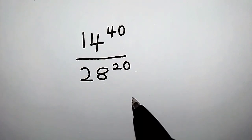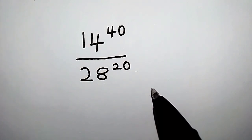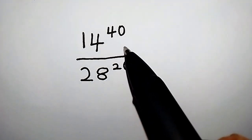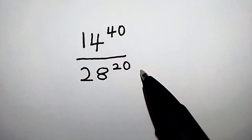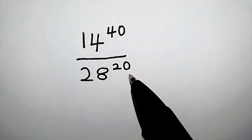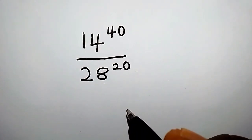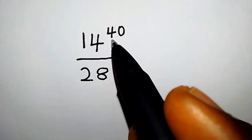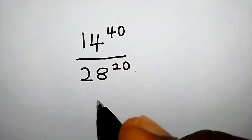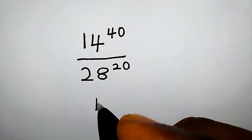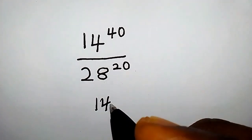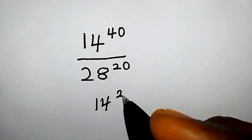Hello. How do we simplify the following expression: 14 to the power of 40 over 28 to the power of 20? With no further delay, let's begin.